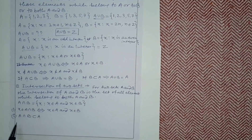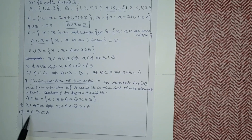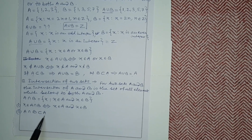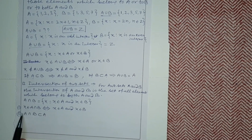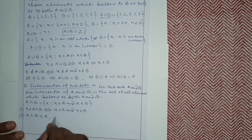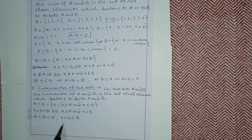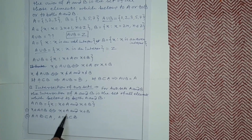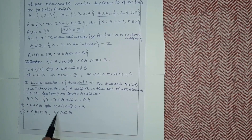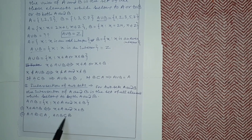Second conclusion: A intersection B is always a subset of A — because A ∩ B contains only common elements, and those common elements are certainly in A. A may have extra elements not in common, but the intersection elements will always be within A. Similarly, A intersection B is also a subset of B, because the common elements are also present in B.